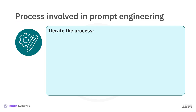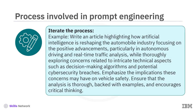Step 6: Iterate the process. The last three steps are repeated until you're satisfied with the response. Consequently, following several cycles of refinement, the final prompt shall take this form: 'Write an article highlighting how artificial intelligence is reshaping the automobile industry, focusing on the positive advancements, particularly in autonomous driving and real-time traffic analysis, while thoroughly exploring concerns related to intricate technical aspects such as decision-making algorithms and potential cybersecurity breaches. Emphasize the implications these concerns may have on vehicle safety. Ensure that the analysis is thorough, backed with examples, and encourages critical thinking.'